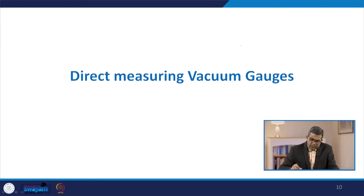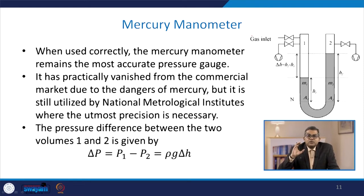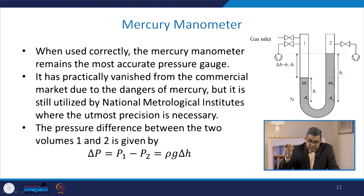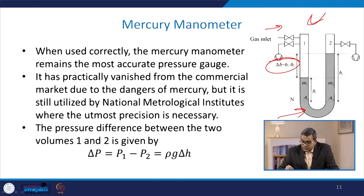Considering direct measuring vacuum gauges, the mercury manometer remains the most accurate pressure gauge when used correctly. It has practically vanished from the commercial market due to the danger of mercury, which is highly carcinogenic and hazardous, but is still utilized by national metrology institutes where utmost precision is necessary. The pressure difference between two volumes is shown by the height difference in the U-tube, with the gas under measurement connected at one end.